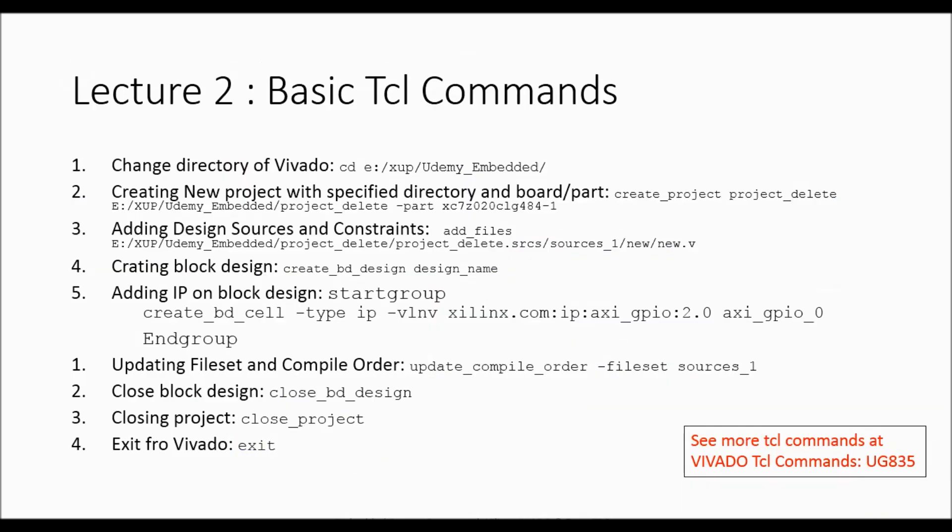Basic Tcl commands include changing directory, similar to other Windows or Linux commands — we use 'cd' followed by a path to change directory. For creating a new project, the command is 'create_project project_name project_directory -part part_name'. To add constraint files to the project we use 'add_files project_directory/sources/source_name'.